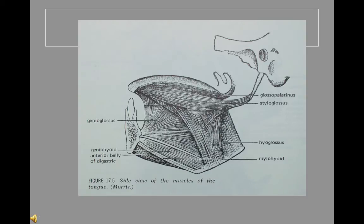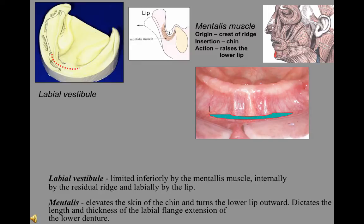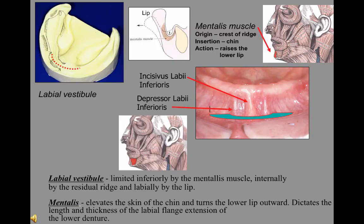The mandibular flange of the denture cannot be placed more inferior than the attachment of the genioglossus muscle in function. The labial vestibule is limited inferiorly by the mentalis muscle, lingually by the residual ridge, and labially by the lip. Incisivus labii inferioris and depressor labii inferioris arise from the mandibular alveolar processes and blend with the orbicularis oris. Both of these muscles present possible problems with flange extension in this area.